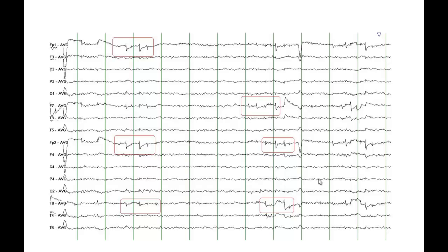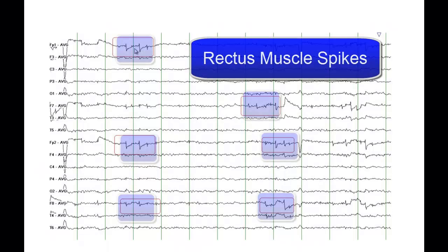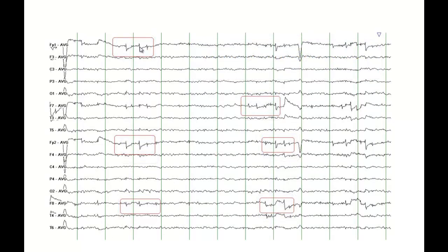These are rectus muscle spikes and are produced from horizontal or vertical saccadic movements. These are not epileptic spikes, these are not epileptiform activity, they do not have any correlation with epilepsy — these are benign variants and should not be overread.